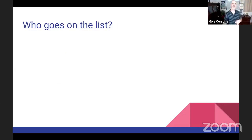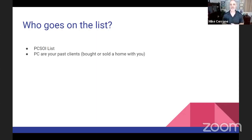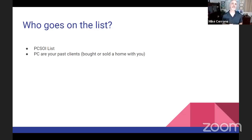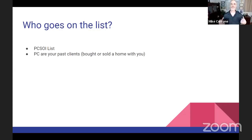First, who goes on the list? The PC is your past clients — anyone you've helped buy or sell a home in the past. I get the question all the time: 'Mike, I haven't kept up with my past clients — five, ten, twenty, thirty years.' Still include them on the list. Even if it's been a long time, we remember these key events in our lives. If you went to your prom in high school — even 40 years ago — you remember the event, the people, how they made you feel. Buying or selling a home is an emotional transaction and they remember you. Put them on your list.